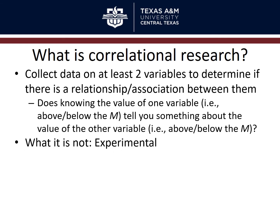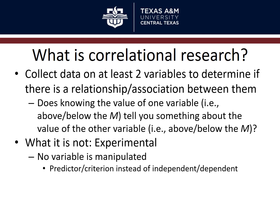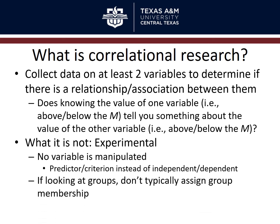Correlational research is not experimental because no variable is manipulated — you don't have an independent variable. So we use different terms: predictor variable and criterion variable, instead of independent and dependent variable. And even if we are looking at groups, we don't typically assign people to groups, so we don't have the power to assign group membership based on level of the independent variable.